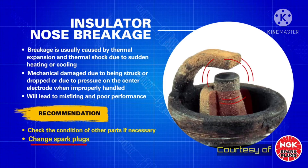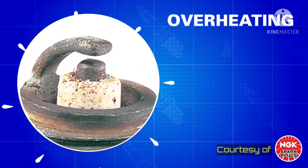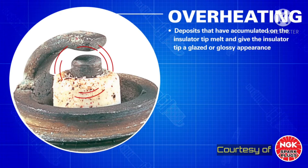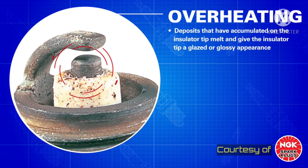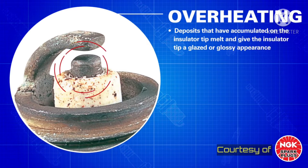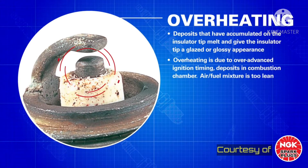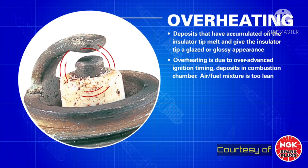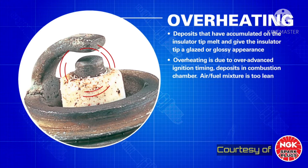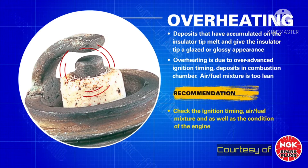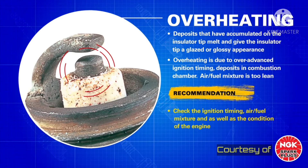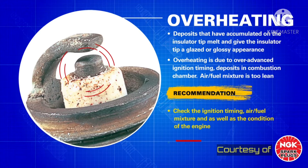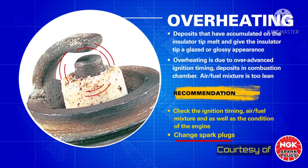Overheating. When a spark plug overheats, deposits that have accumulated on the insulator tip melt and give the insulator tip a glazed or glossy appearance. Overheating is due to over-advanced ignition timing, deposits in the combustion chamber, or an air-fuel mixture that is too lean. It is recommended to check the ignition timing, air-fuel mixture, and the condition of the engine, and also to change the spark plugs.